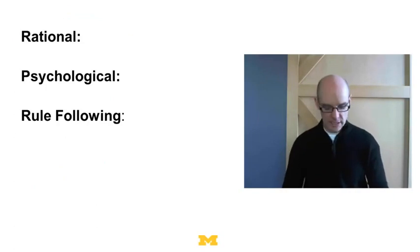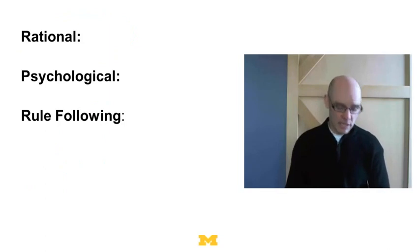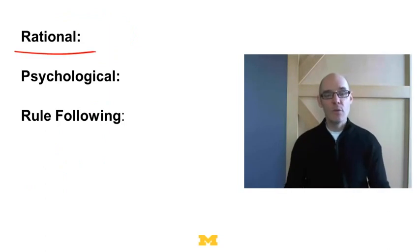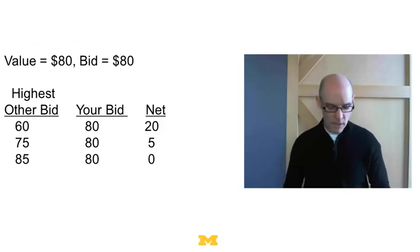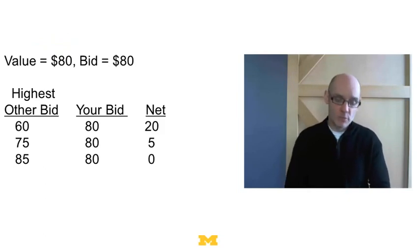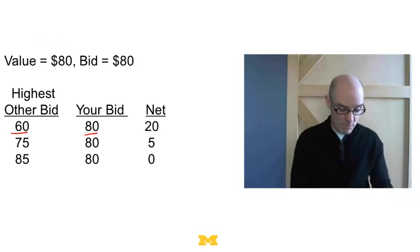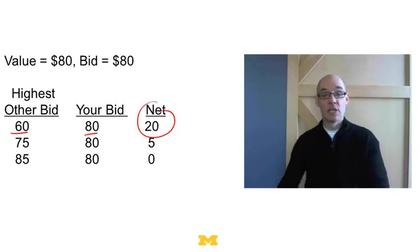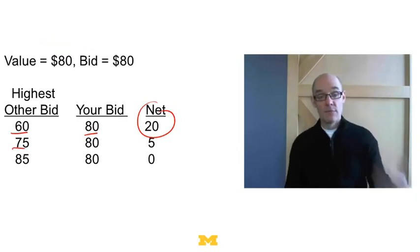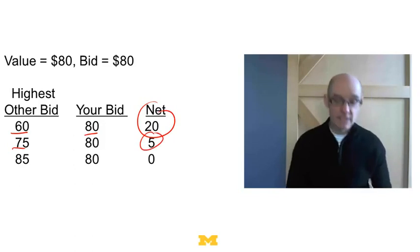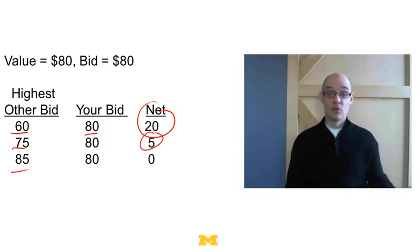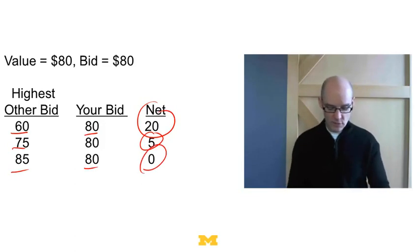Let's think about how you'd bid rationally in a second price auction. Suppose your value is 80 and you bid your true value of 80. If the highest other bid is 60, you get it and pay 60, so your net gain is $20. If the highest other bid is 75, you get it, pay 75, and your net gain is $5. If the highest other bid is 85, you don't get it and your value is 0. So your payoffs are 20, 5, and 0.